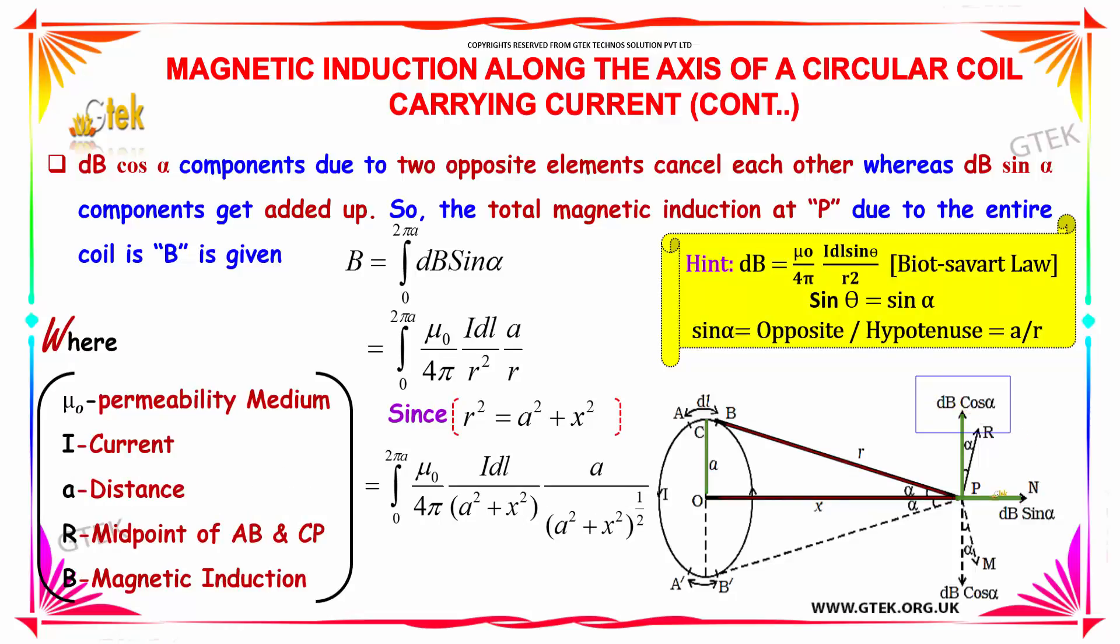Since dB cos alpha components are of opposite direction, they will cancel each other, whereas dB sin alpha components get added up. The magnetic induction at P due to the entire coil is given by B is equal to integral 0 to 2 pi A dB sin alpha.